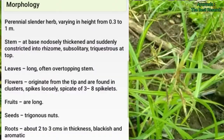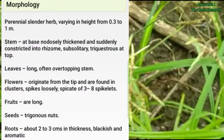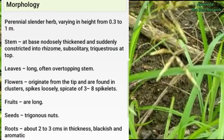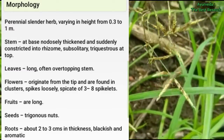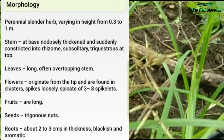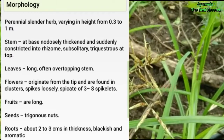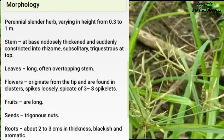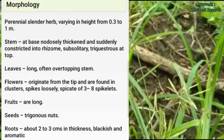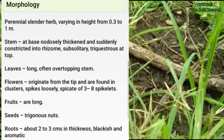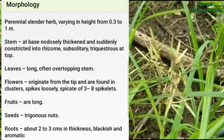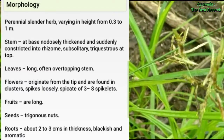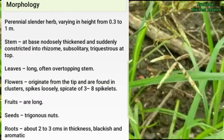Morphology: it is a perennial slender herb varying in height from 0.3 to 1 meter. The stem at the base is nodously thick and suddenly contracted into the rhizome. Leaves are long, flowers originate from the tip and are found in clusters. Fruits are long, seeds are trigonous nuts, and roots are due to rhizome in thickness. The part used is tubers.